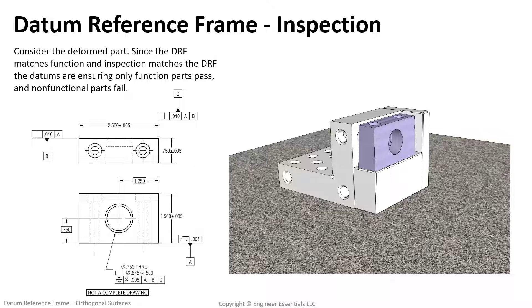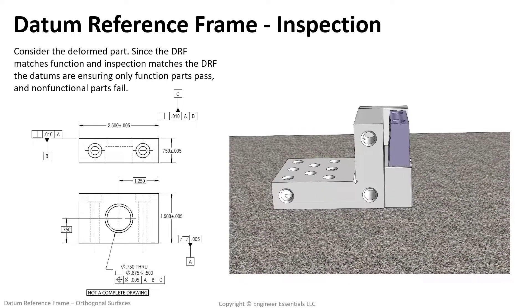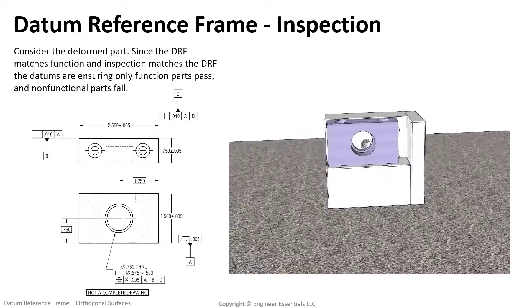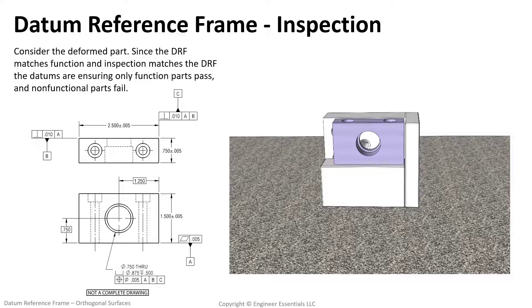To explain this further consider the imperfect part we show here being set up for inspection. Engaging planar datum feature A needs three points of contact on the datum simulator to establish the datum. Then when datum B is introduced the next two points of contact from datum feature B will engage with datum simulator B. This locks in one degree of translation and one degree of rotation. And finally datum C requires just one point of contact to lock down the final translation.